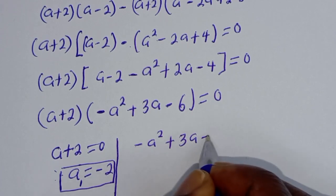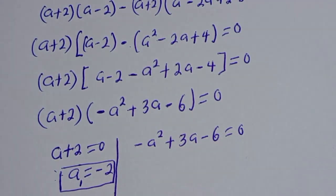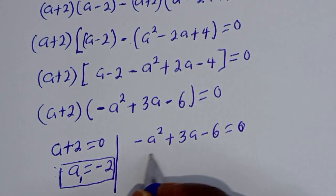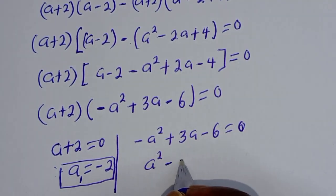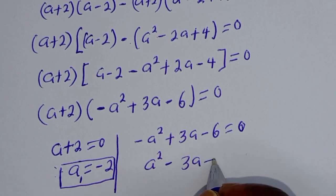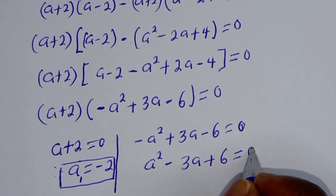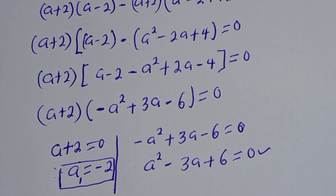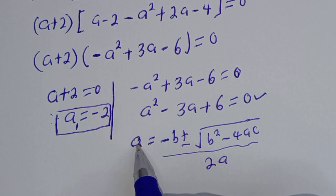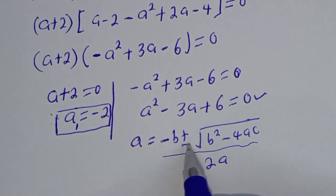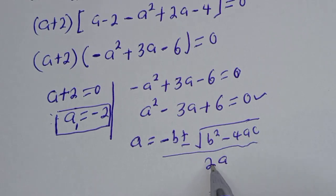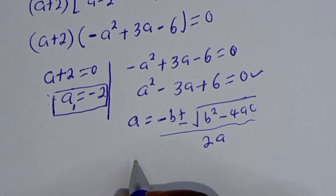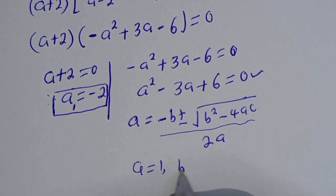The second case: minus a squared plus 3a minus 6 equals 0. Multiplying all through by minus 1, we have a squared minus 3a plus 6 equals 0. This is a quadratic equation which can be solved using the quadratic formula.